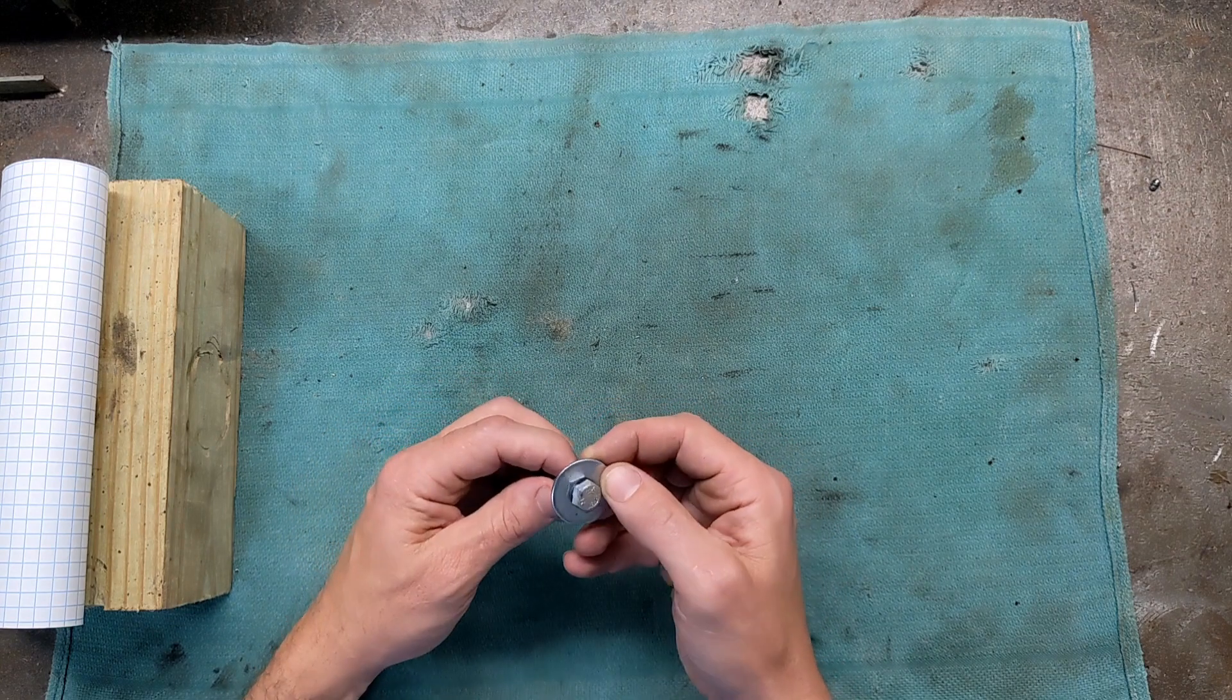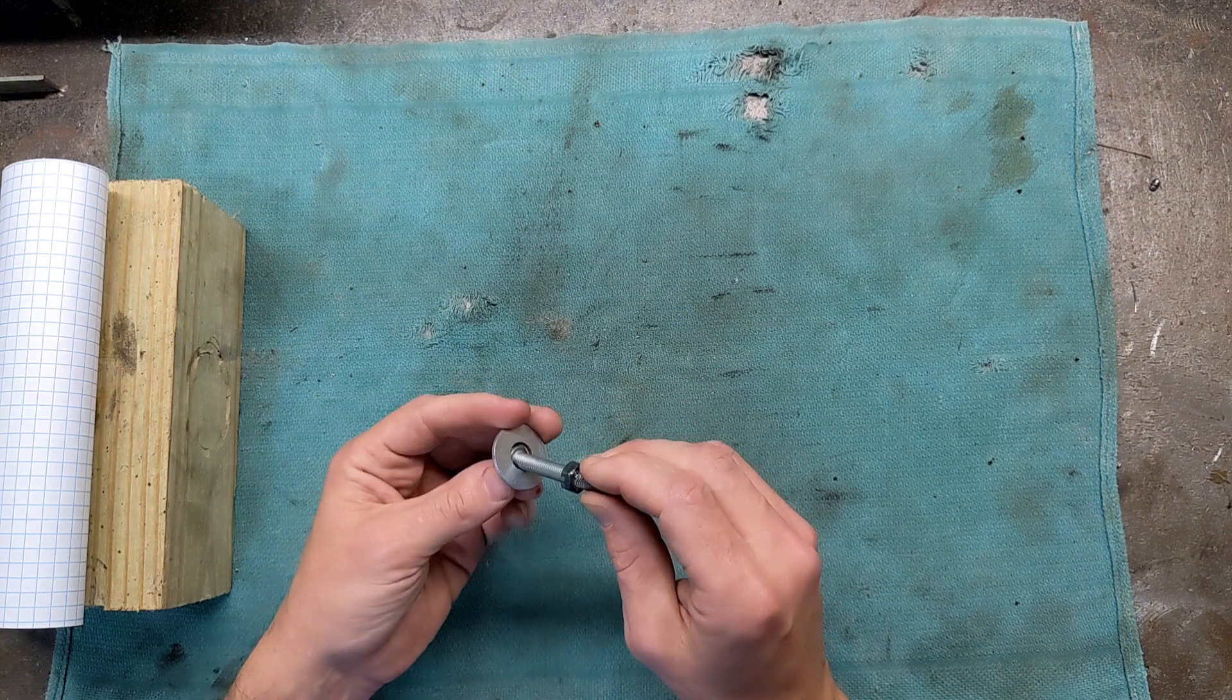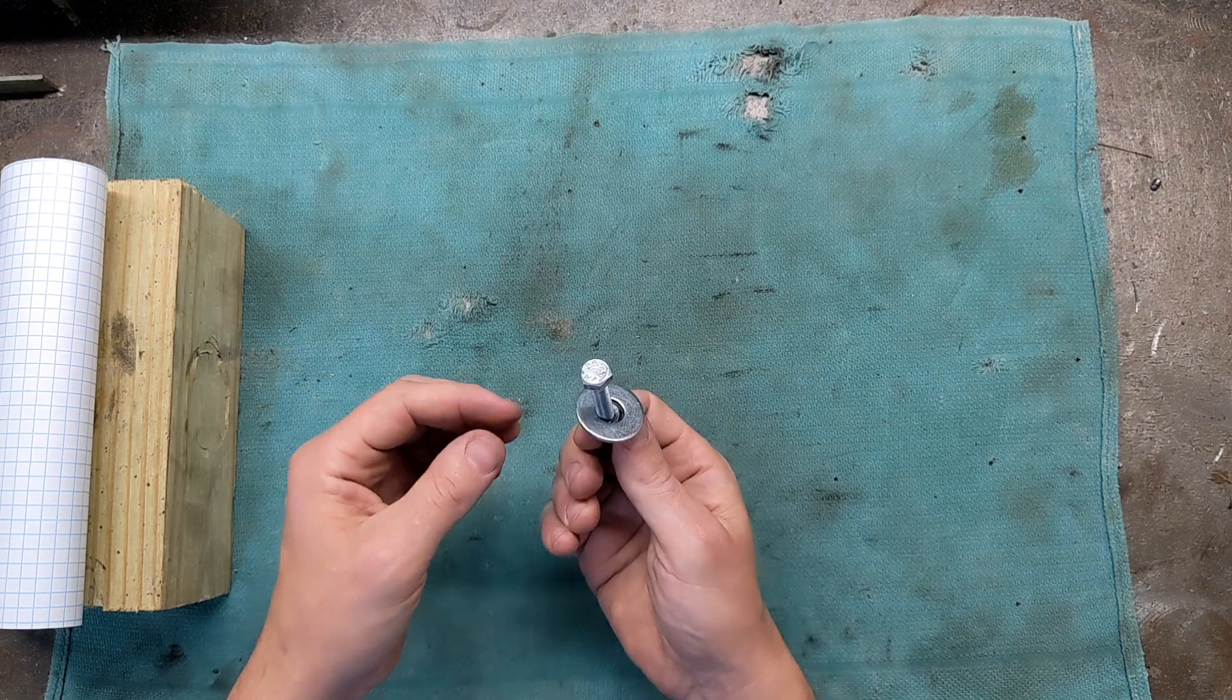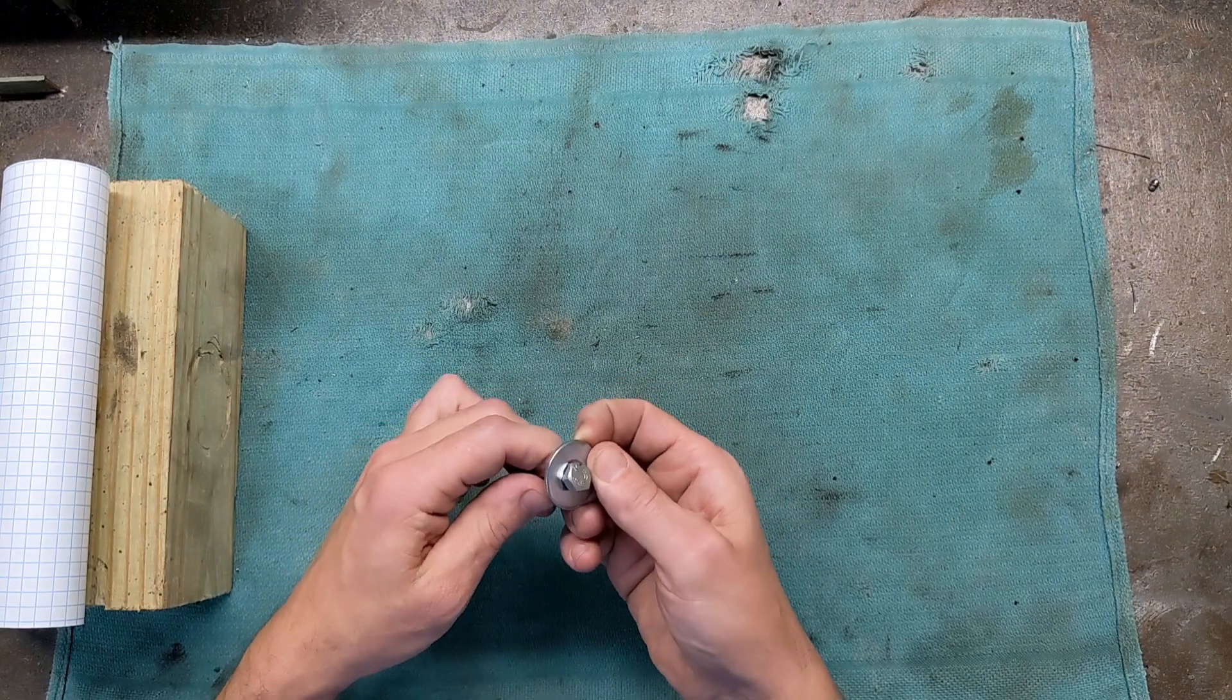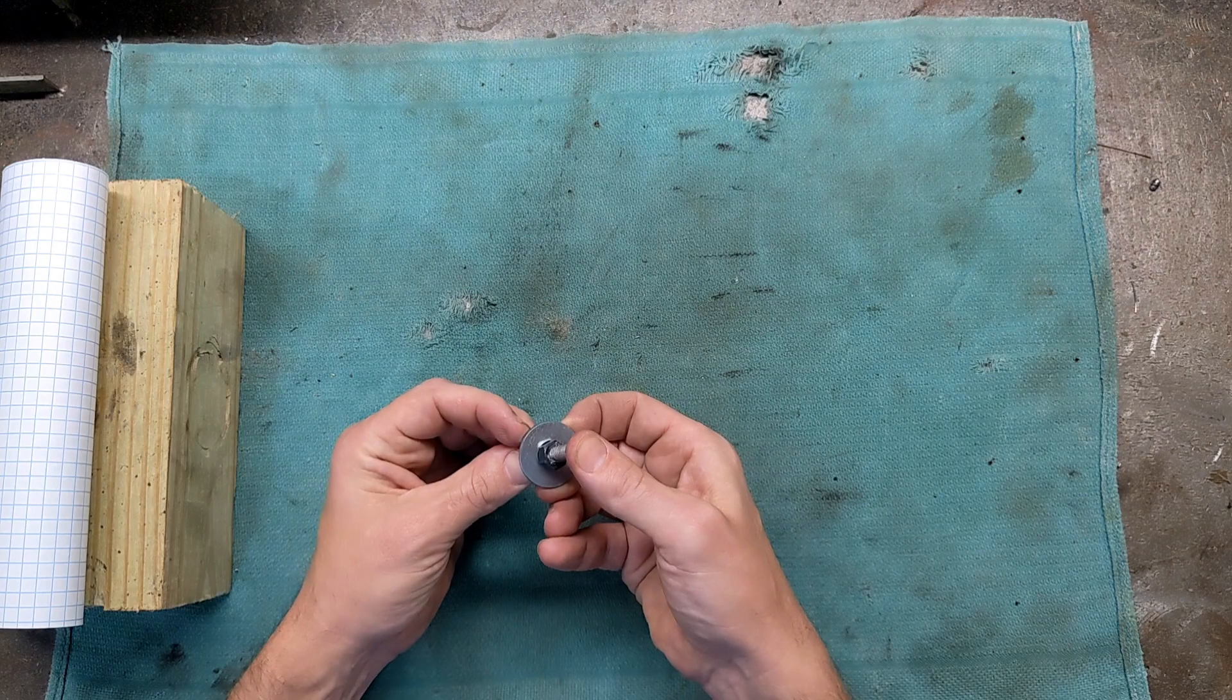And then the trick is to get the washer off of the bolt. So you hand this to your buddy and they fiddle around with it for a while and they try everything they can to get the washer off of there.